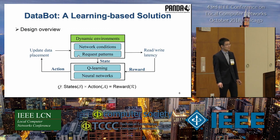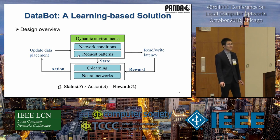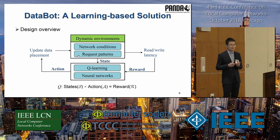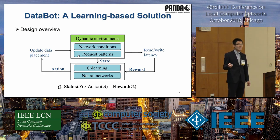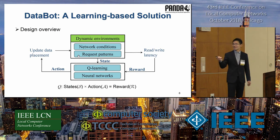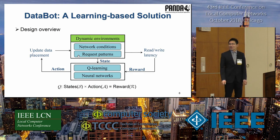Let's show the design overview of the proposed scheme, DataBot, which is basically a Q-learning-based solution. Q-learning is a classic model-free reinforcement learning technique. The purpose of Q-learning is to learn a policy — a policy that tells an agent what action to take under what circumstances. For the data placement problem, the dynamic information of the environment can be learned through a series of data flows, to understand which data items should be placed on which server such that the corresponding read-write latency can be reduced. The measured read-write latency are used as a reward to train the recurrent model. DataBot continuously learns better data placement decisions over time in the long term.